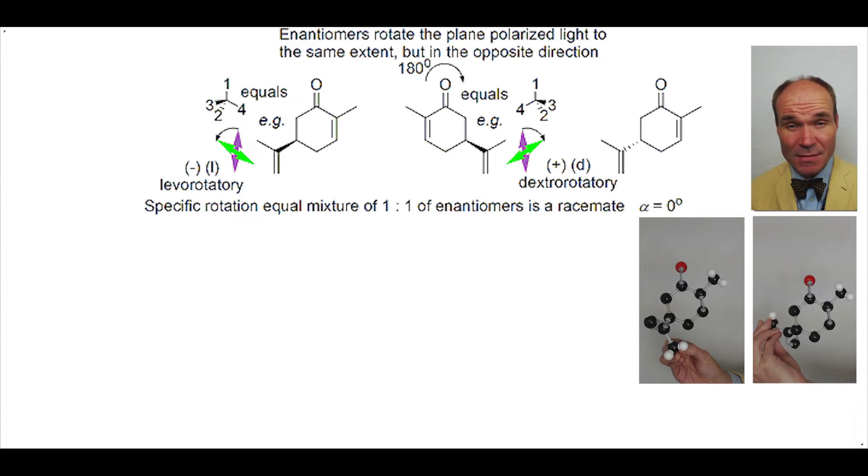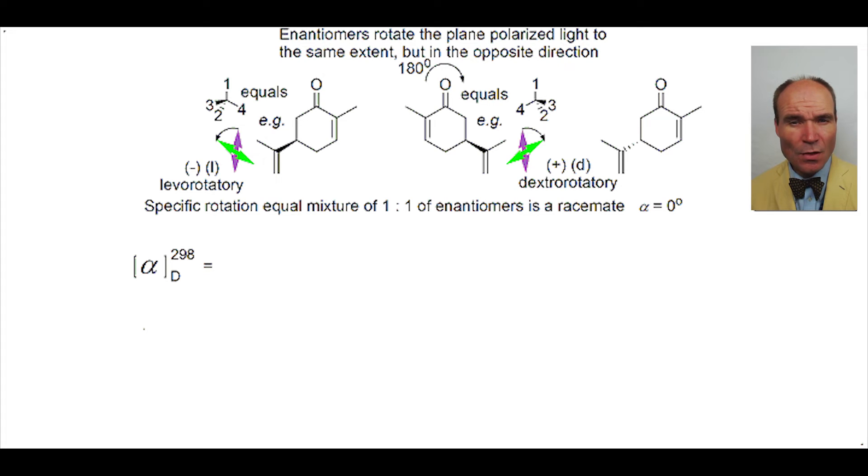Any rotation can be described as alpha. For reproducibility, we need to determine other parameters. These include temperature, commonly at 298 degrees Kelvin, so standard room temperature.